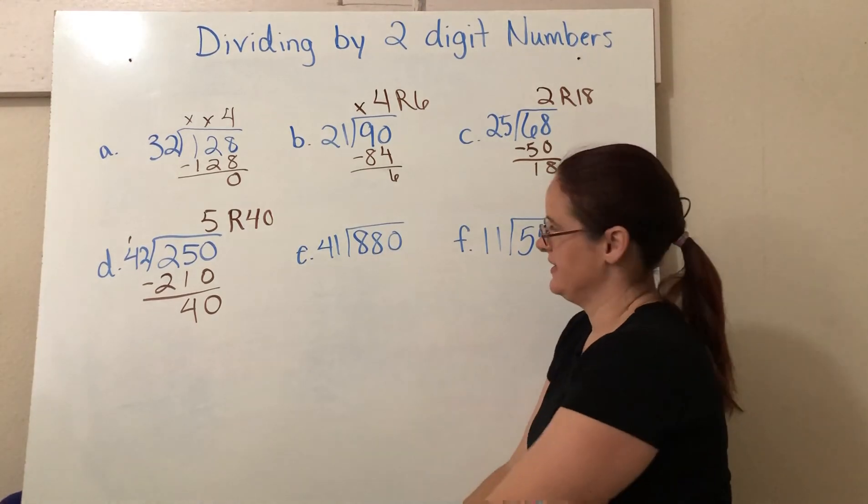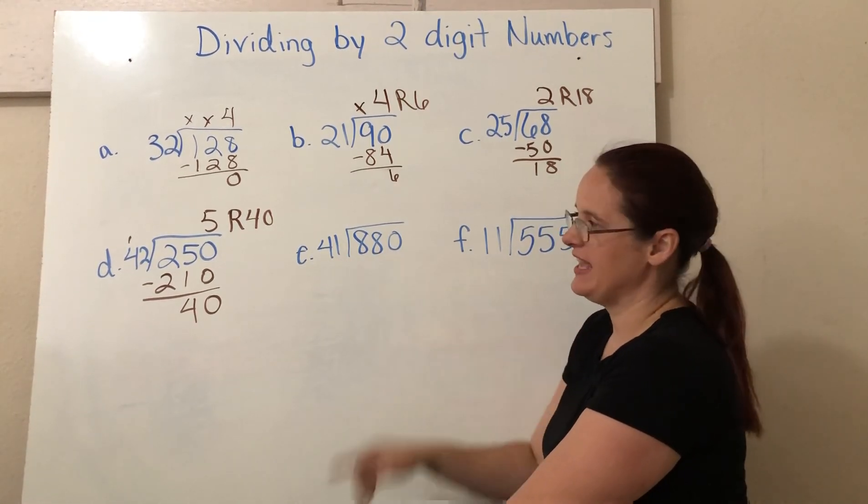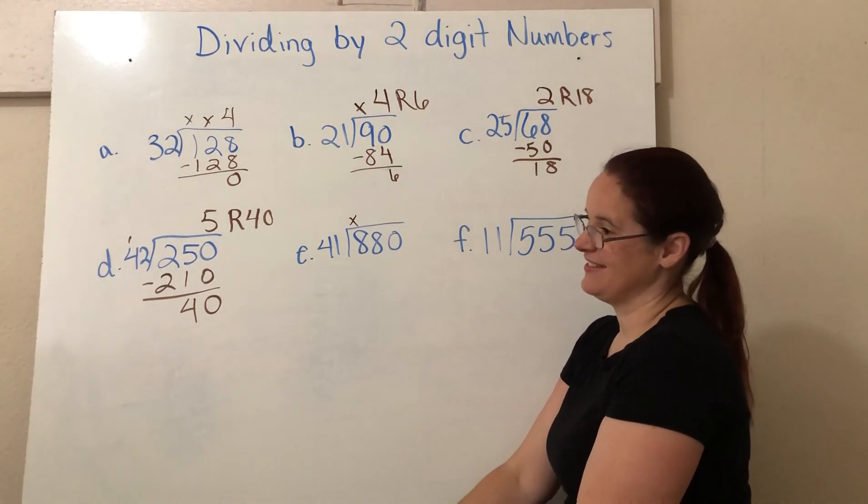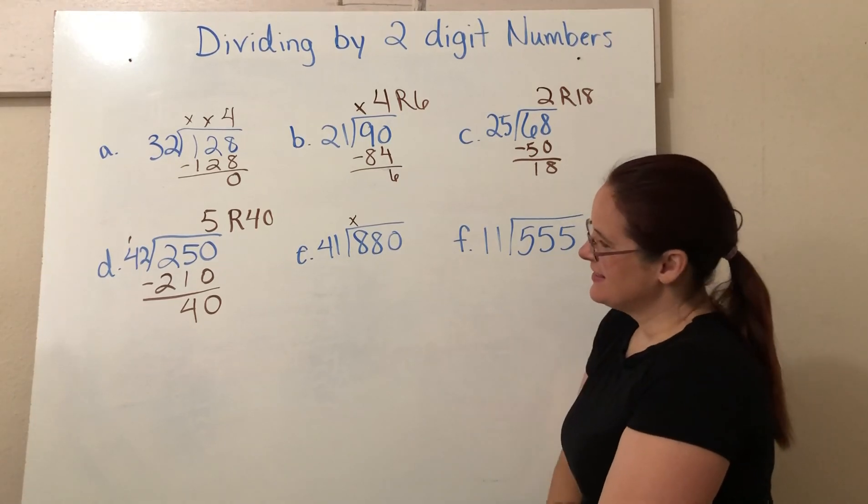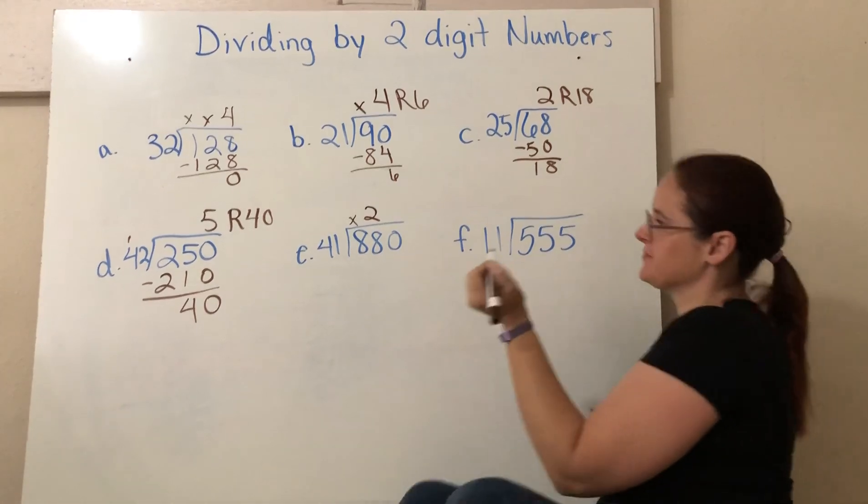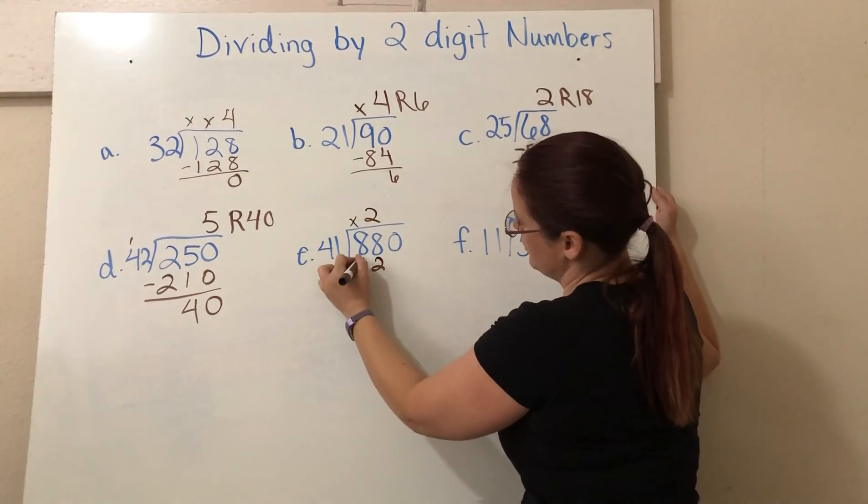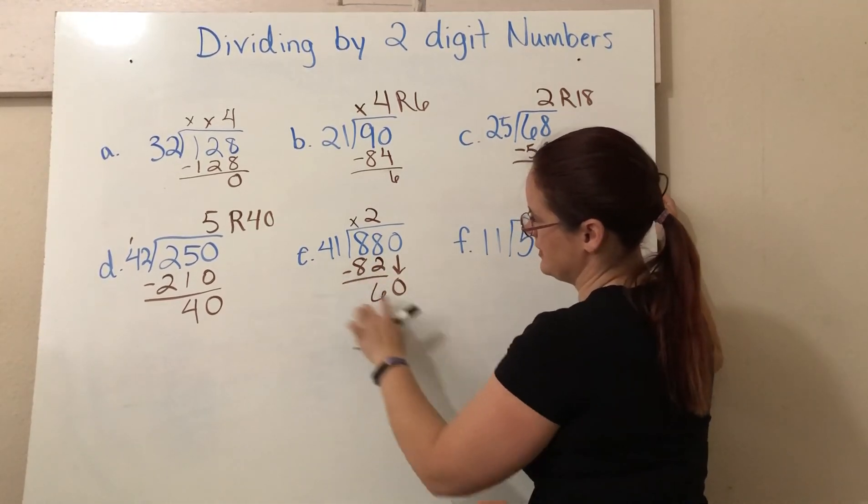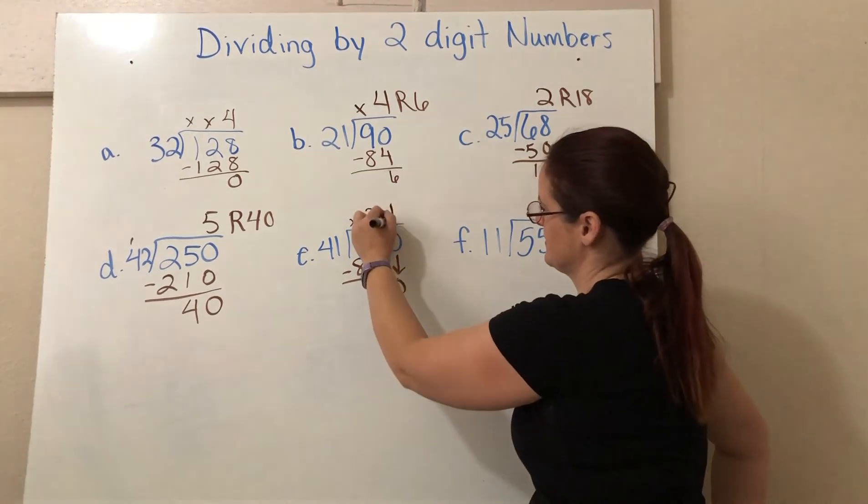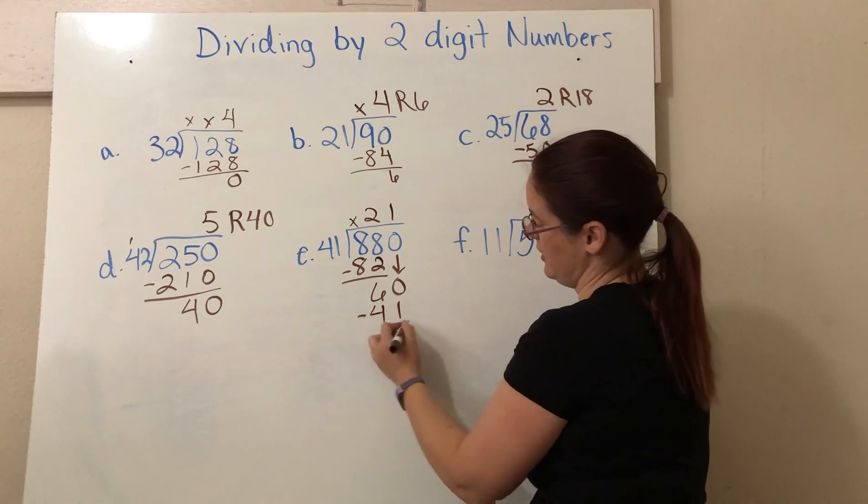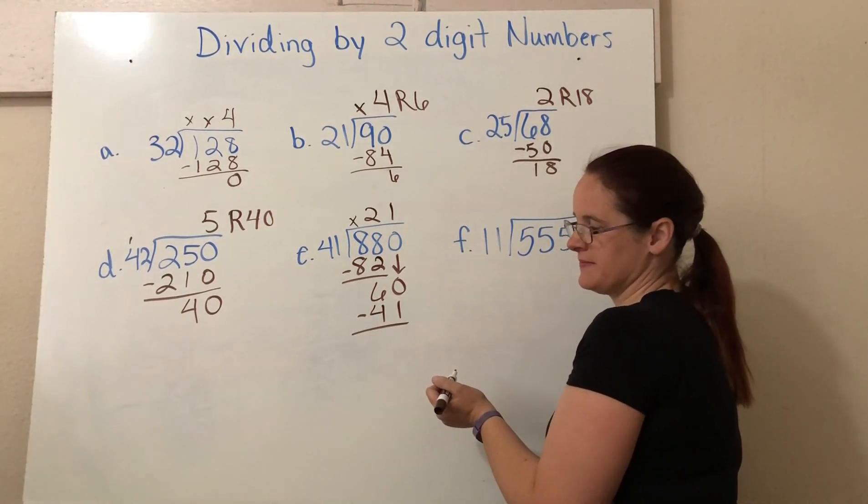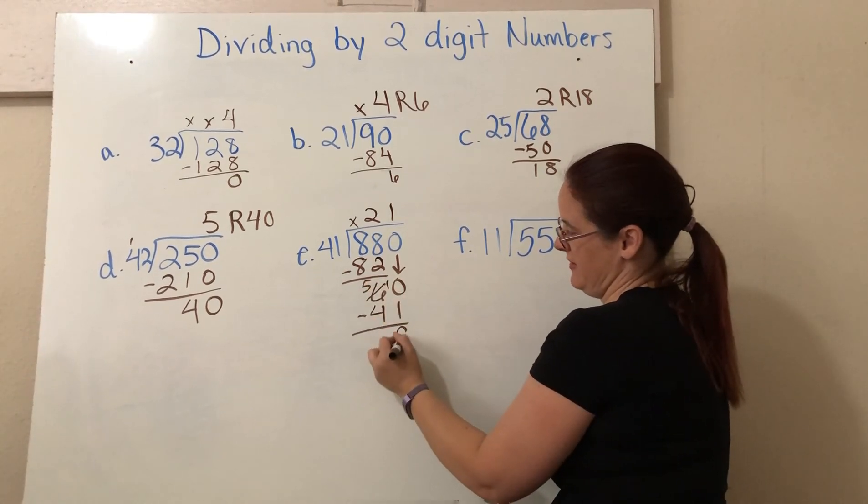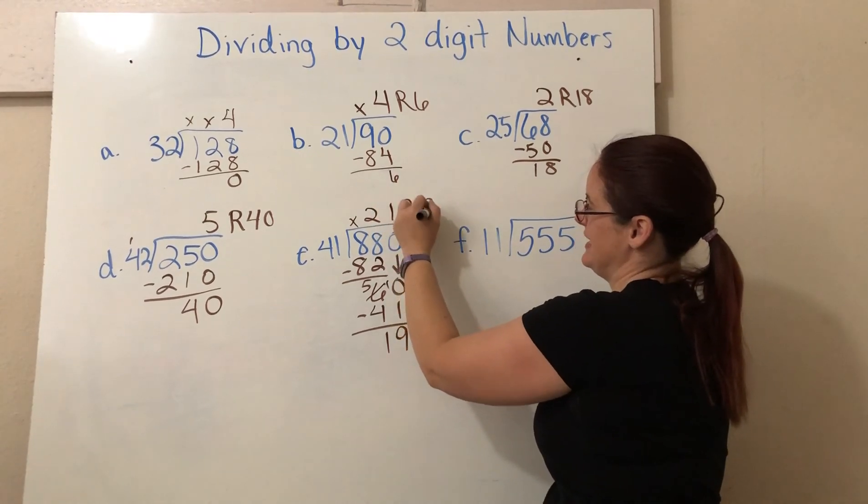Okay. 880 divided by 41. So how many times would 40 go into 8? Doesn't. How many times would 40 go into 88? That's two times. What's two times one? Two. And two times four? Is eight. And then we subtract. And bring down our zero. How many times does 40 go into 60? Once. Just once. So one times 41 is going to give me 41. 60 minus 41? I'm going to want to borrow. All right. So 19. 21 with a remainder of 19.